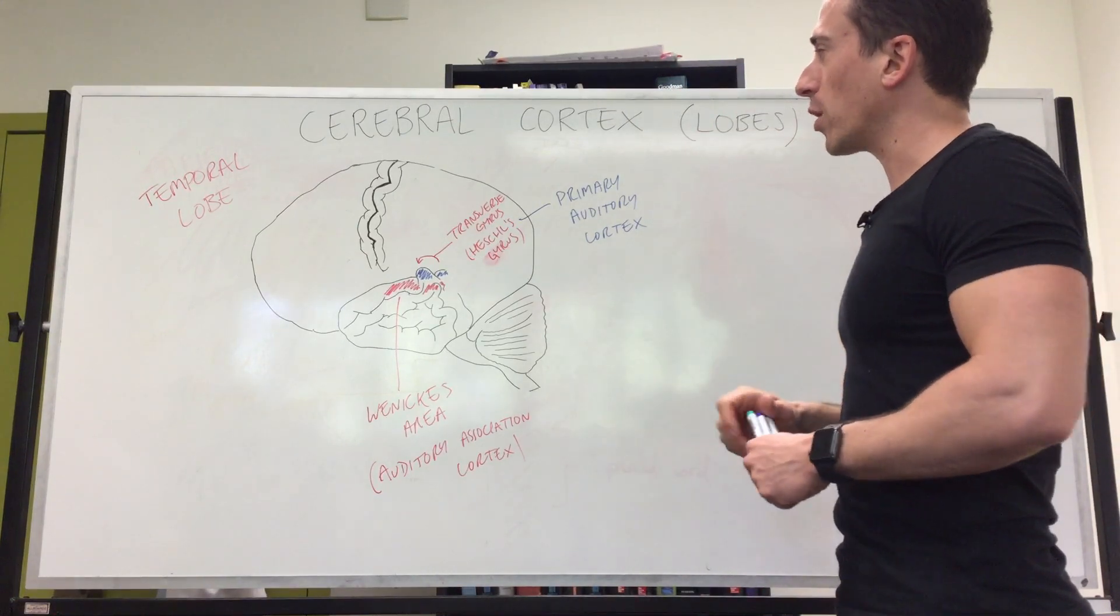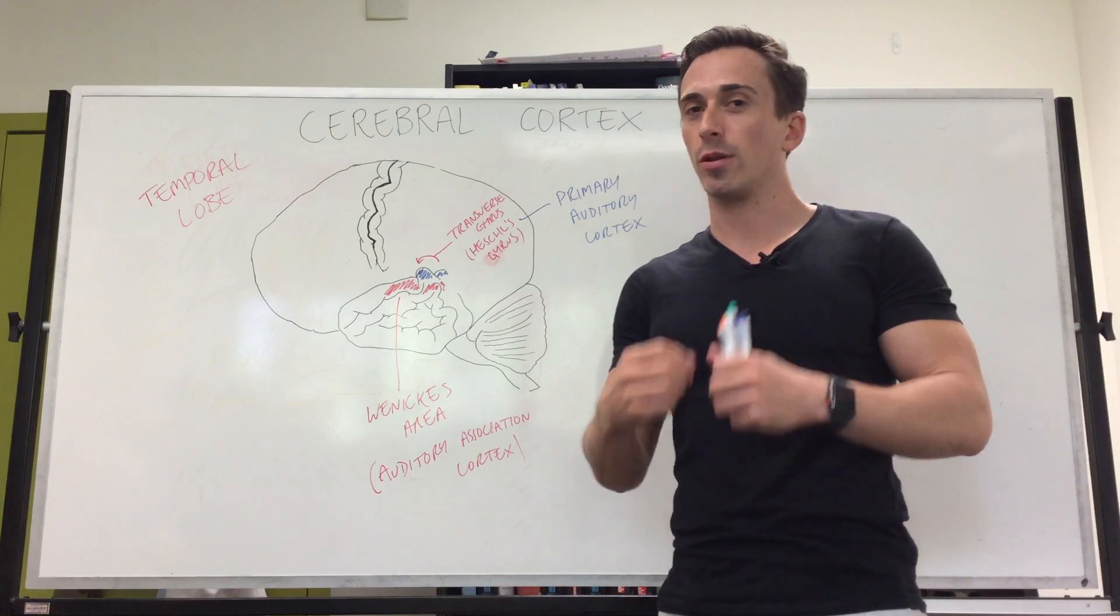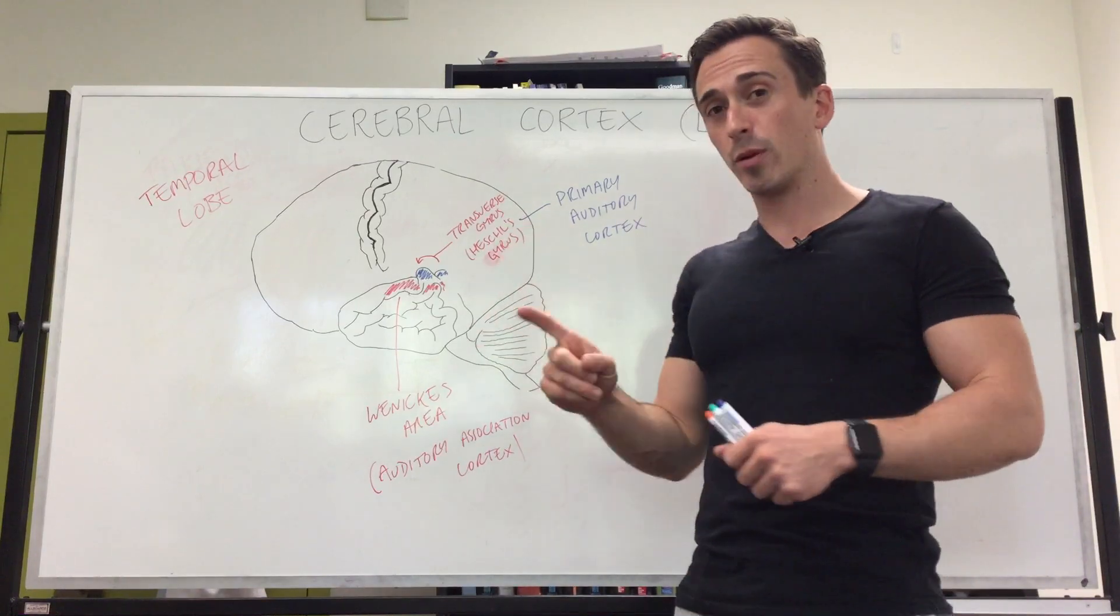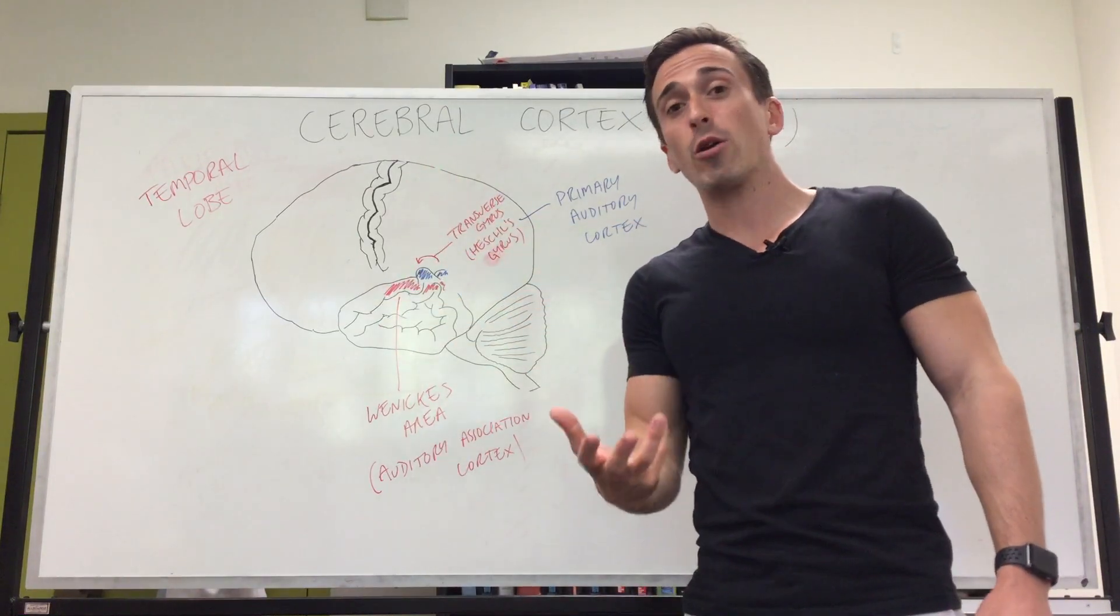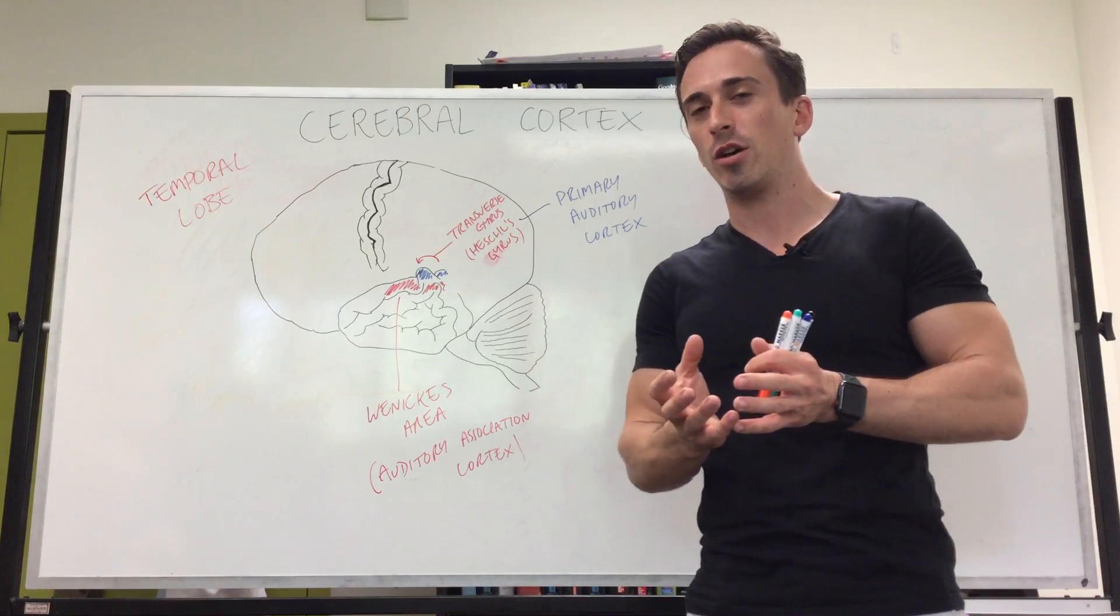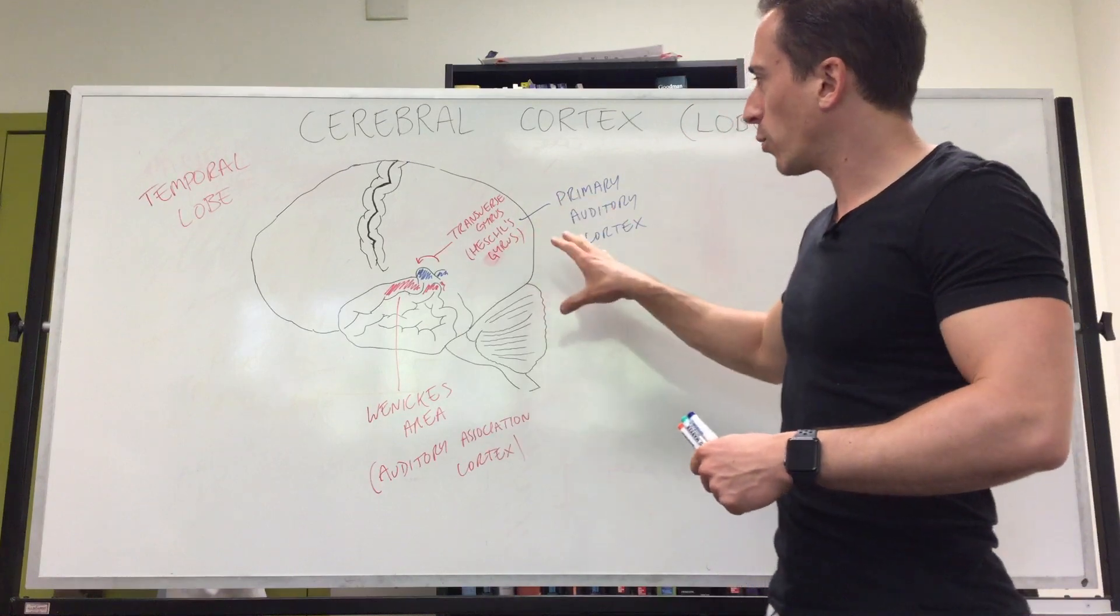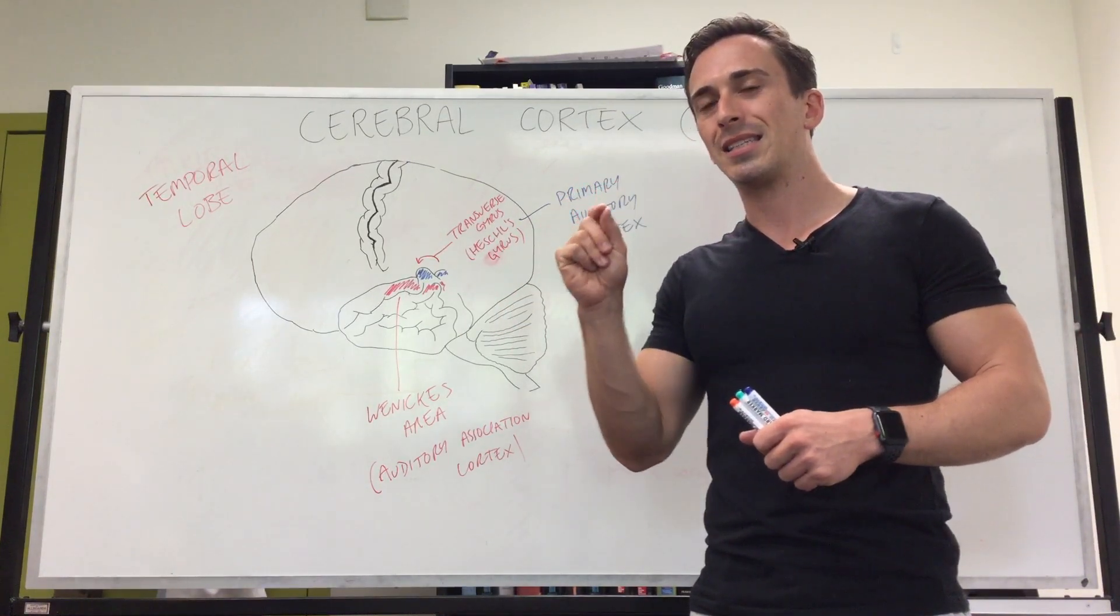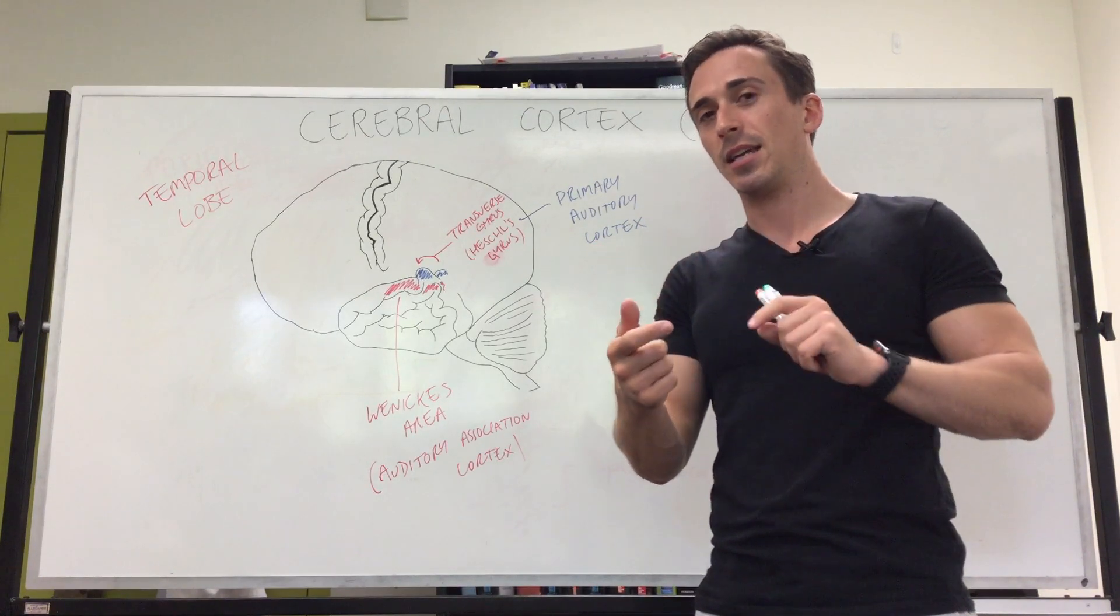That's pretty much all I want to show you about the temporal lobe. The temporal lobe also plays a role in vision—predominantly vision comes into the occipital lobe, but the parietal and temporal lobes play a role in the association of visual input, making sense of what you see. But I predominantly wanted to focus on the temporal lobe's role in, firstly, hearing sound and speech, and secondly, understanding sound and speech.